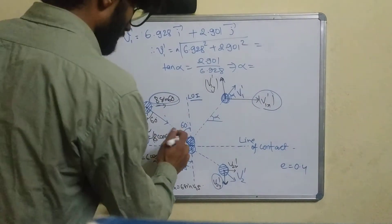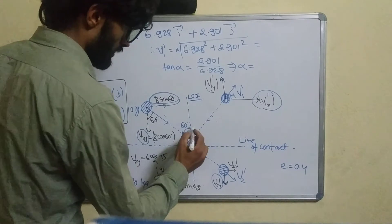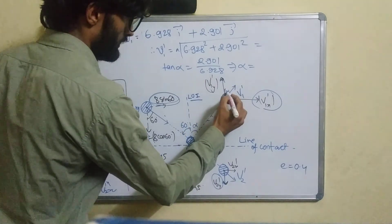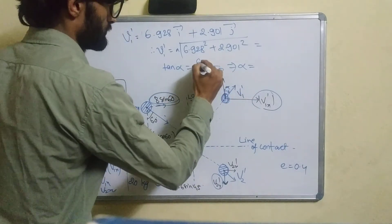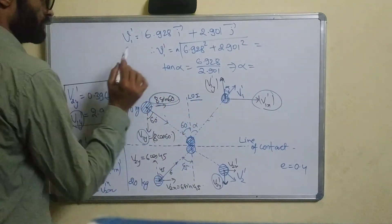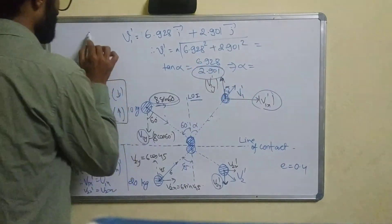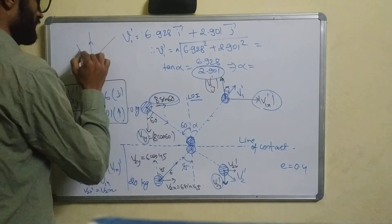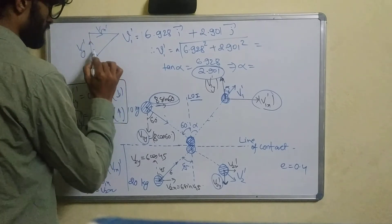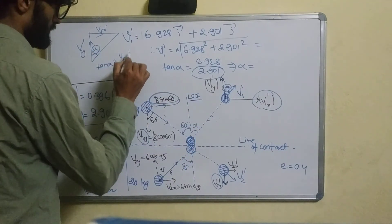The angle alpha is found from the line of impact. Alpha equals the calculated angle. The vertical axis gives alpha from: alpha = arctan(v1y' / v1x'). The components are V1y' dash and V1x' dash, and we find the sum to get B1.